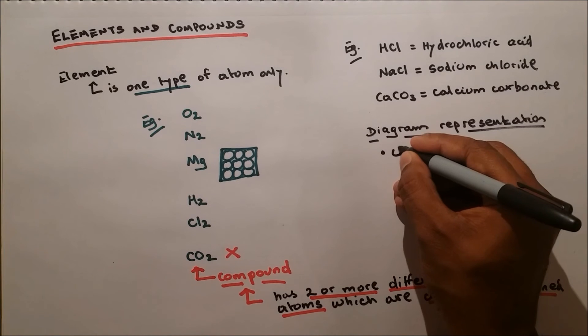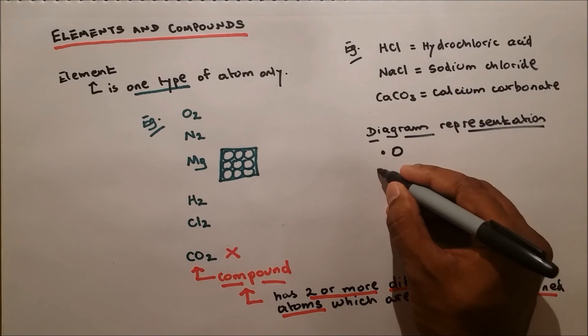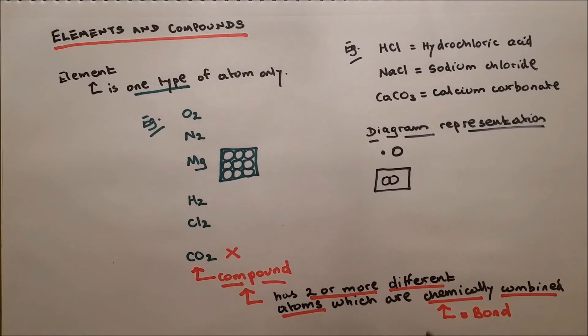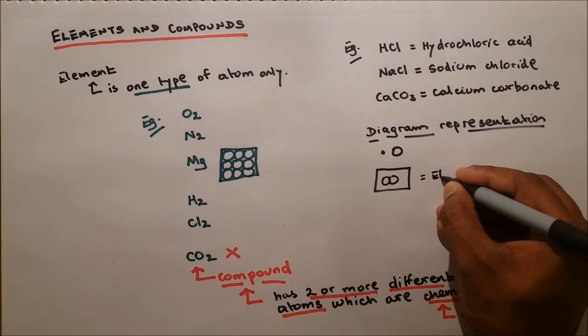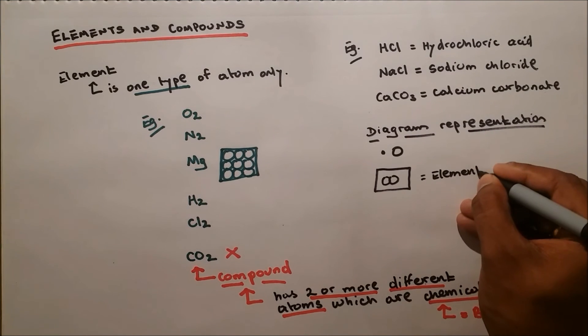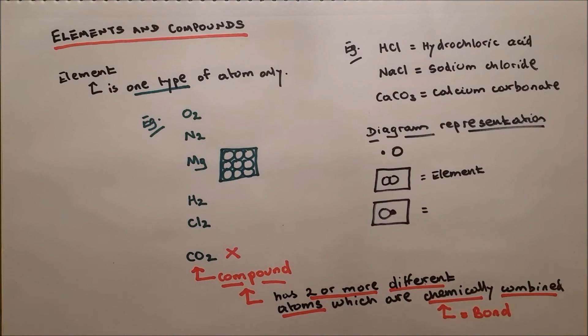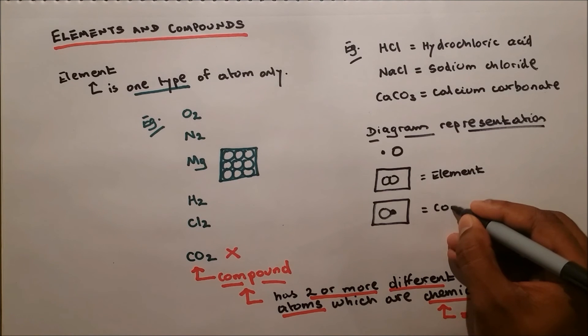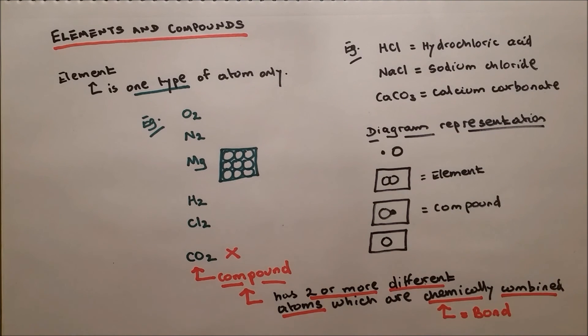What about this one? You can see those two different atoms are chemically combined. This is called a compound. This atom is on its own, it's just one type, one atom, so it's an element.